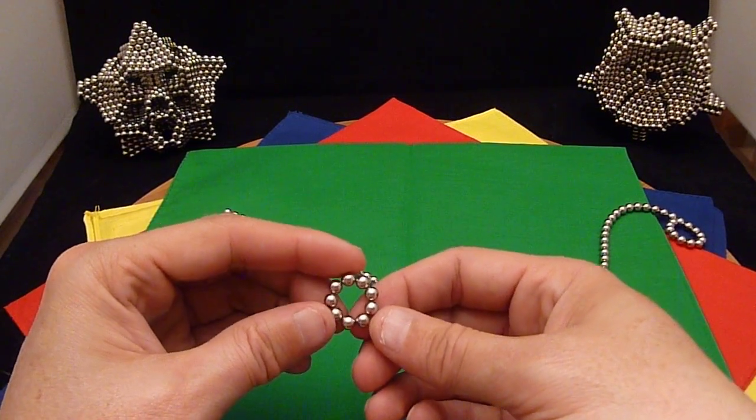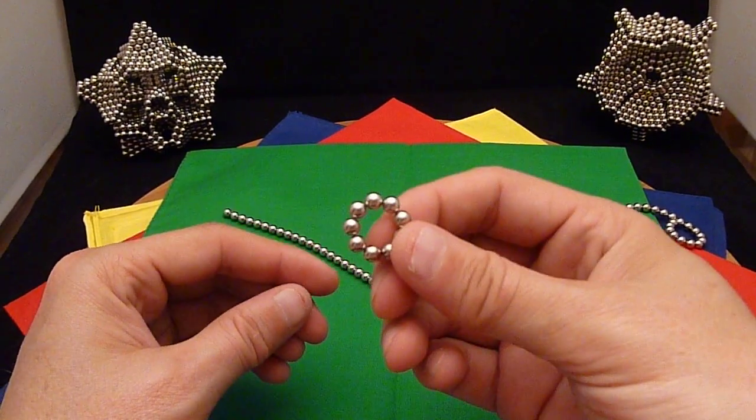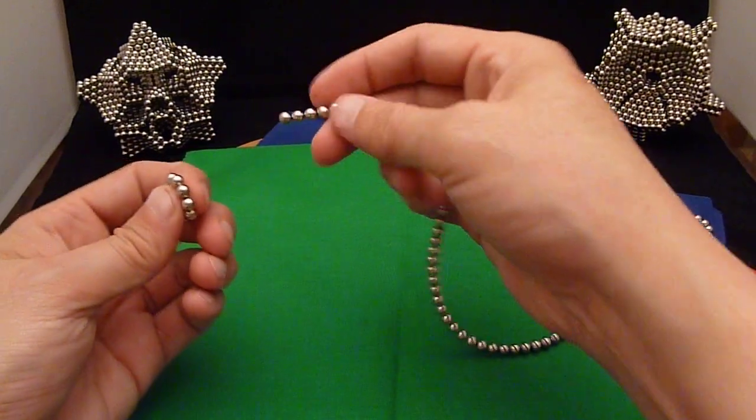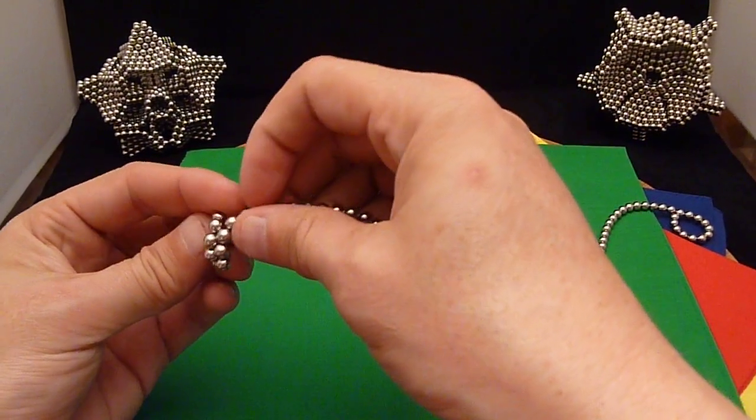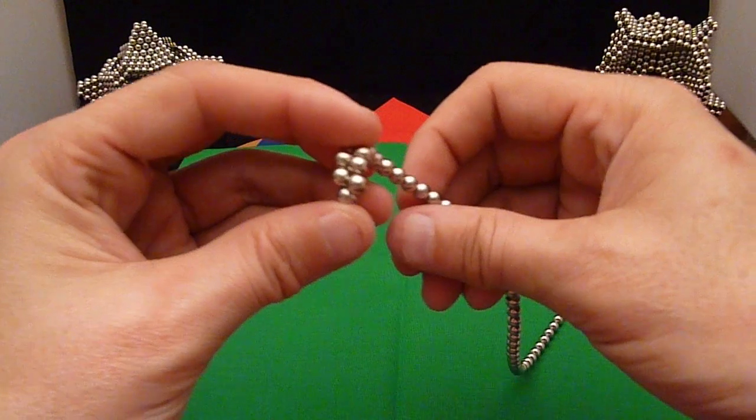9 ball, I think, is the easiest. So I'm going to start off with a 9 ball today, and I'm going to add to this to make a tube. Again, it's going to be offset.